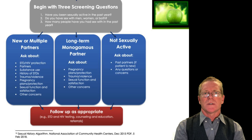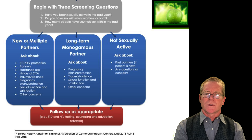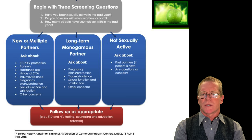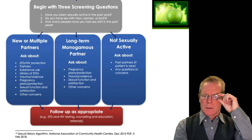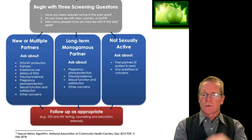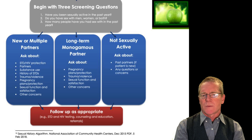Substance use is another mechanism where disease can be transmitted, and history of STDs is again an important factor that can help us understand health risks. Pregnancy and pregnancy protection are also important considerations when multiple partners are common.